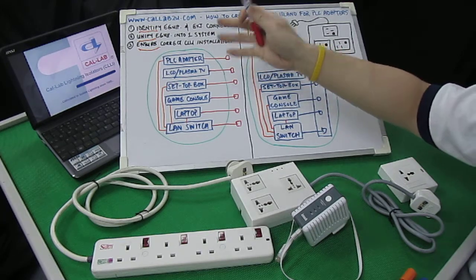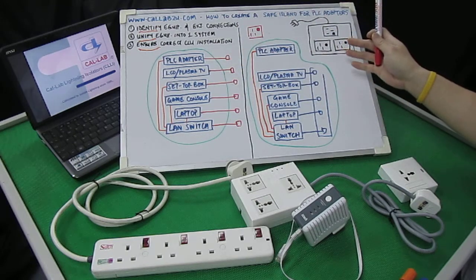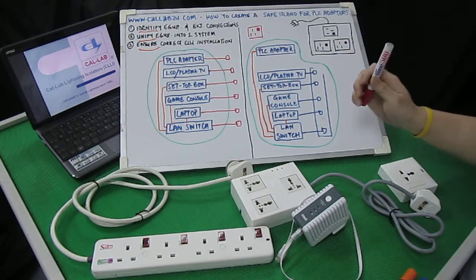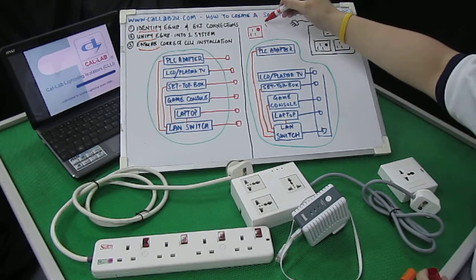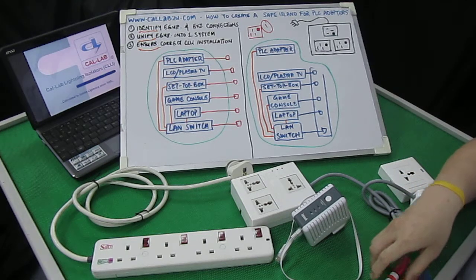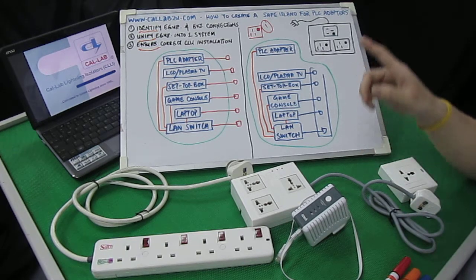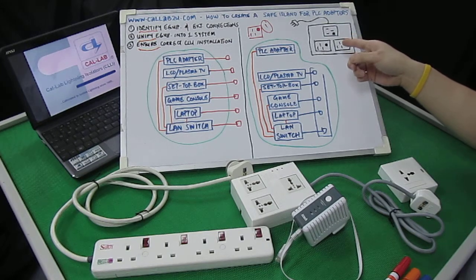Step number two is to unify the equipment in this setup into a single system. Let's draw your attention to the right-hand side of the board here. The first thing we've identified is the external connections, which is the power supply. As in previous segments, the first thing you need to do is to use the correct lightning isolator model. In this particular case, we're going to introduce a lightning isolator for PLC adapter setups. This model is called a Shure Streamer.